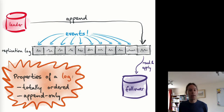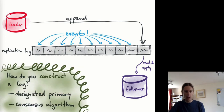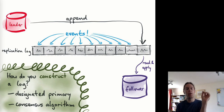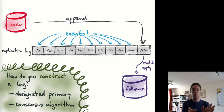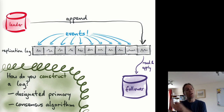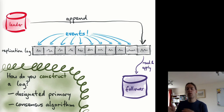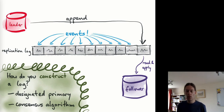There are two key characteristics of a log that make this form of replication work. First, the log is totally ordered — all replicas see exactly the same sequence of log records in the same order. Second, it's append-only — we only append new events at the end and they remain immutable thereafter. How do we construct one of these logs? Either administrators designate one machine as leader and manually reconfigure if the leader becomes unavailable, or you use a consensus algorithm such as Paxos or Raft, which does the same thing automatically with automatic leader election and failover.